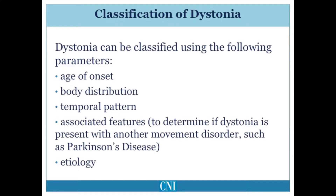There are many ways to classify dystonia. Typically, it is classified by age of onset, distribution of which body parts are affected, whether it is static, progressive, or intermittently present, and whether other associated movement disorders or systemic neurologic problems are present.